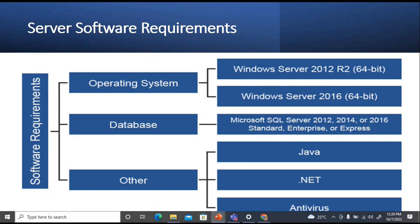Server software requirements include an operating system and a database. The OS should be Windows Server 2012 R2 64-bit or above, or Windows Server 2016 64-bit. The database should be Microsoft SQL Server 2012 R2 64-bit, or 2016 Standard, Enterprise, or Express Virtual Server. Additional requirements include support for Java, .NET, or NDIS.